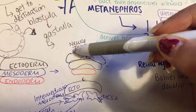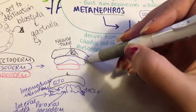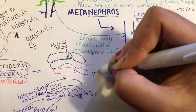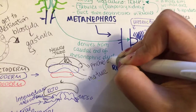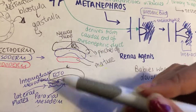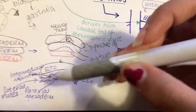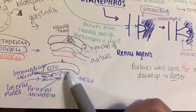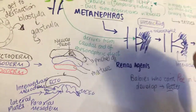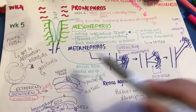The ectoderm folds in and forms a neural tube, while the mesoderm and endoderm are maturing. The ectoderm is being pinched off, and beneath it you have the mesoderm, which has different parts. The paraxial mesoderm is most medial with angular-shaped structures. Then you have the intermediate mesoderm, and this is the one that gives rise to our kidneys — all of nephrogenesis is happening within the intermediate mesoderm.